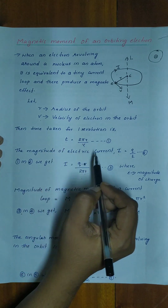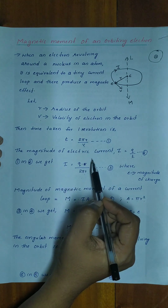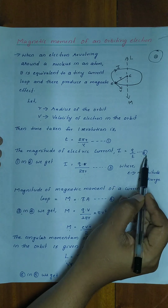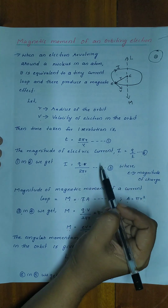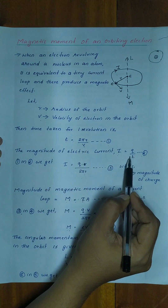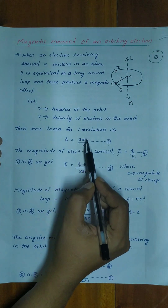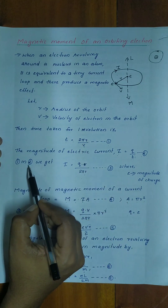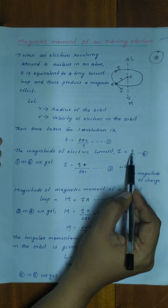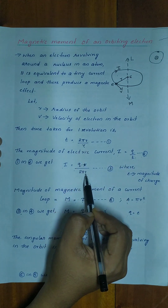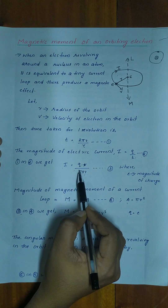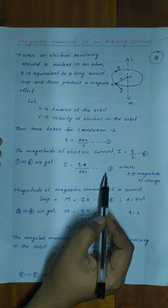Then, the magnitude of electric current I is equal to q by t. Substituting the value of t, we get I = q × v / 2πr. We consider this equation 3.